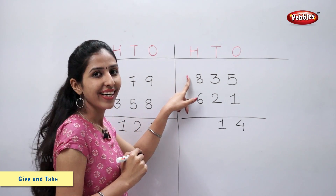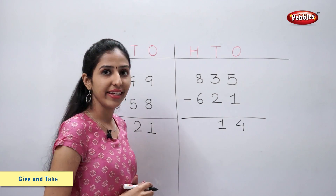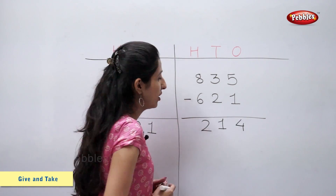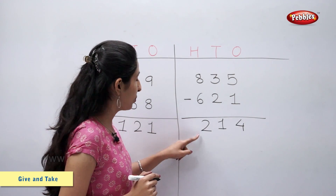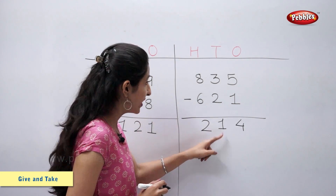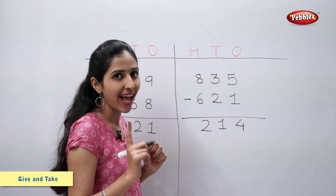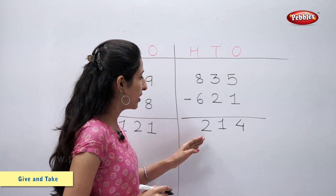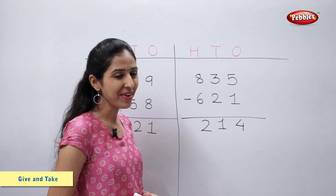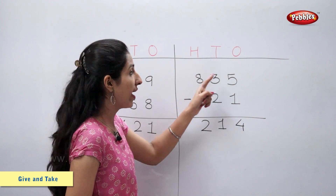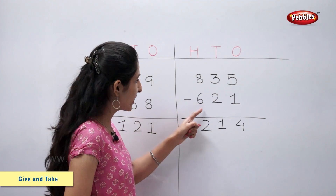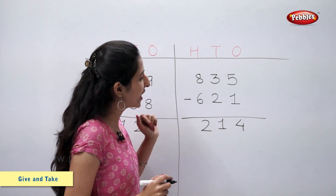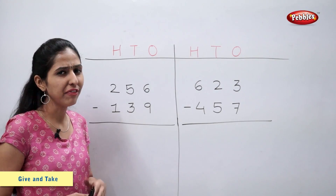Eight minus six is equal to two. So now we have two hundreds, one ten, and four ones. So the number is two hundred and fourteen. So eight hundred and thirty-five minus six hundred and twenty-one is equal to two hundred and fourteen. Let's solve this example.